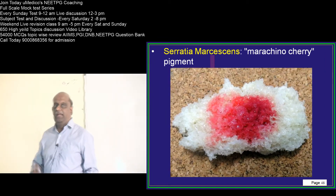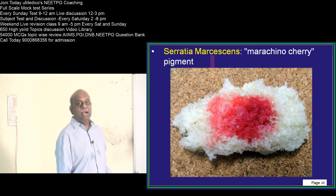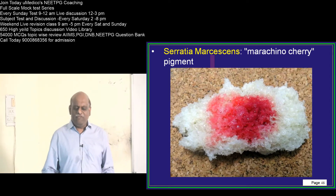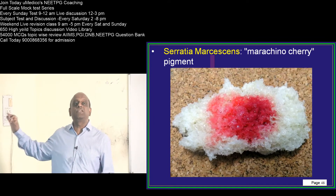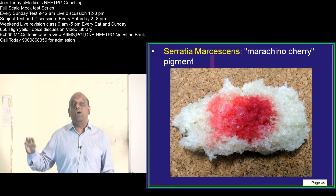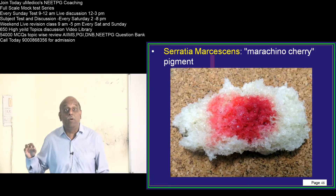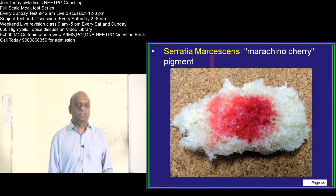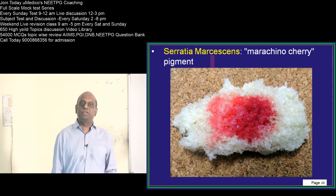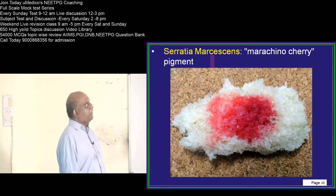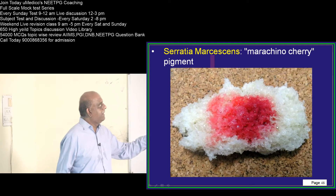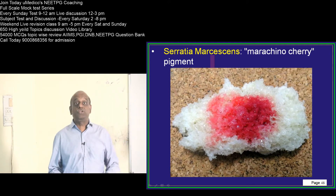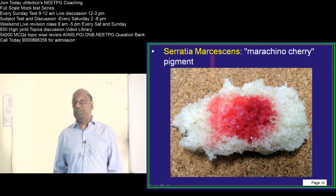Next comes Serratia marcescens — one of the favorite questions of the examiner. Pseudo-hemoptysis is caused by which organism? It is not real hemoptysis. Serratia marcescens typically produces a cherry-colored pigment, and that is the reason it is called pseudo-hemoptysis. Don't forget.